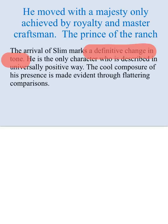Up until the arrival of Slim, everything about the ranch is harsh, critical, not in any way supportive or empathic. When Candy first met George and Lenny, he criticised them for being late. When the boss met them, he was doubtful and sceptical. When Curly meets them, he's already a threat. But when Slim arrives, we have positivity - for the first time, a character who is universally positive.